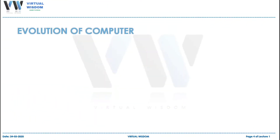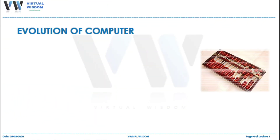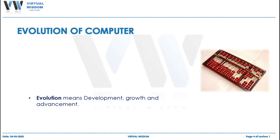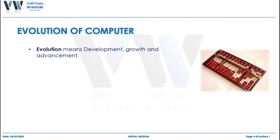After the introduction about the computer and what it actually is, we will now discuss its evolution. When we talk about computers, we should also know how the computer we are using became advanced and what it basically was. This advancement, growth, and development of a computer is called the evolution of computer. We will look at some of the evolutions of computer.